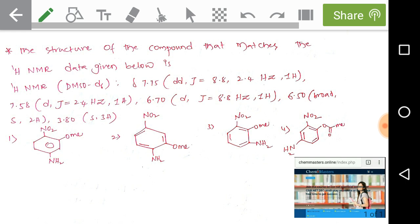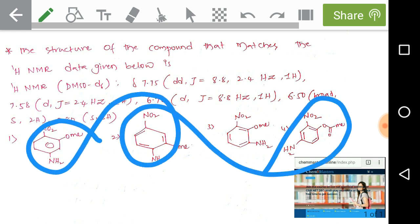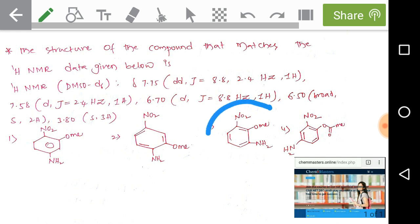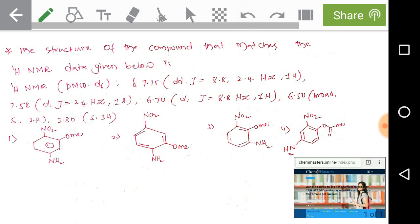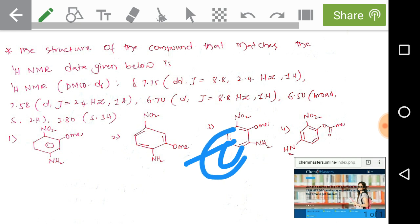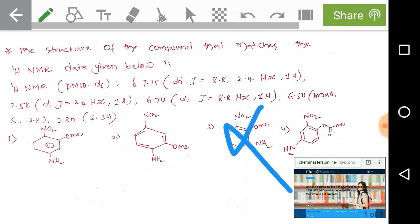Now the question is: looking at the options, three of them have suitable HNMR values. But if you look at the third option, a double doublet with those J values is not possible because that particular hydrogen has multiple ortho activities — two ortho hydrogens on it. So a simple double doublet is not possible; more than one doublet would be observed. That's why we can simply eliminate option 3.